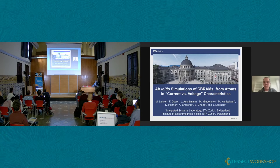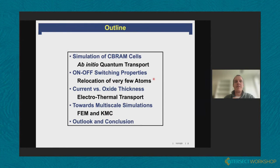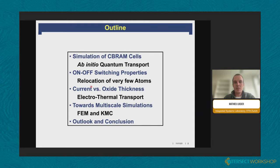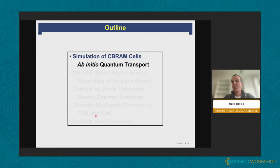I will talk about the simulation of conductive bridging random access memories. The outline of my presentation: I will start with a short motivation about why we chose an ab initio model to simulate those devices, then present two applications. The first is the transition from the high to the low resistance state — how many atoms are involved. Then I will present experimental results concerning the influence of oxide thickness on breakdown current, and finally introduce two simulation approaches we are currently pursuing to improve our simulations.